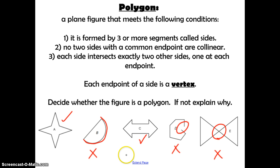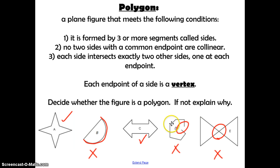Hopefully your answers match mine, and you notice the same problems that I did. This is rounded, this is not closed, and this intersects itself in the middle of the polygon.